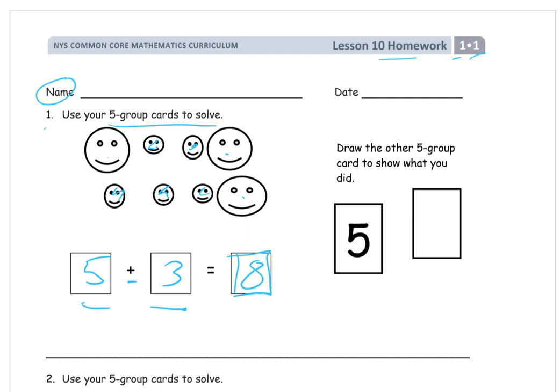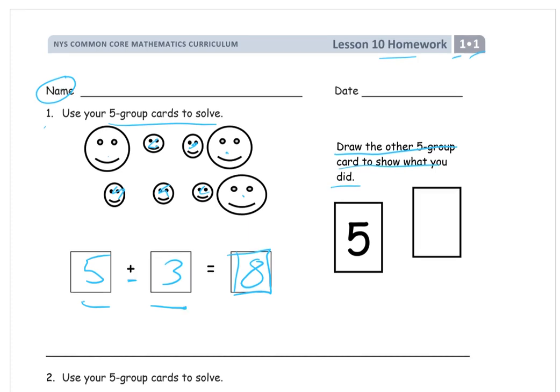Now on this side here, it says draw the other five group card to show what you did. So we've got the first one is the number five, and then it would be one, two, three more. So five, six, seven, eight. That would be the other five group card.